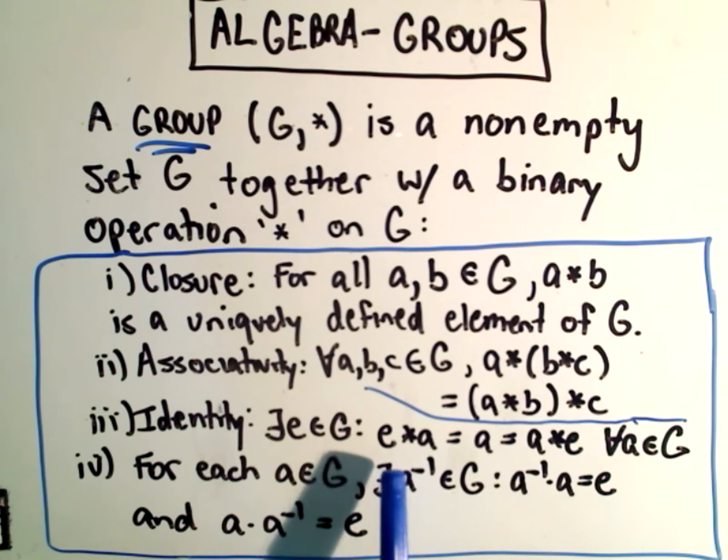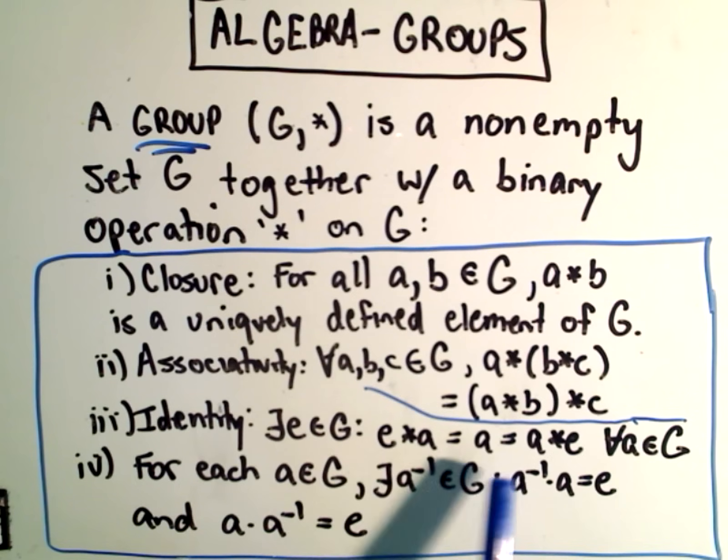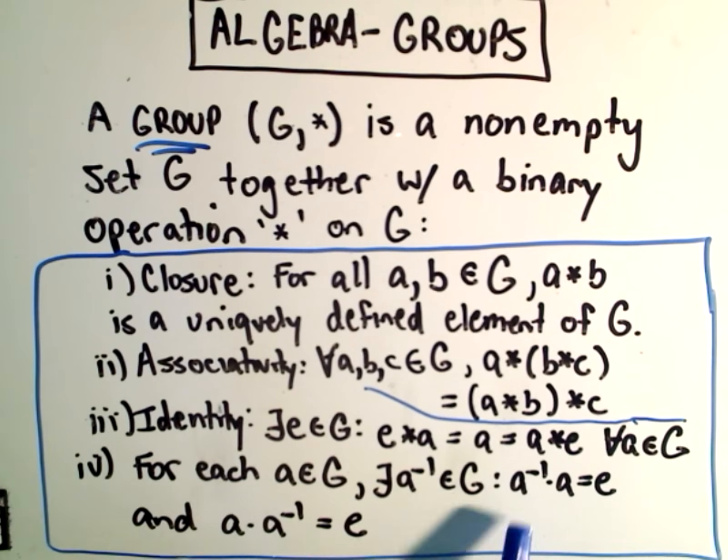There's an identity element in the set so that when you apply the identity element to any element, you get the same element back. And for every element in the set, there exists an inverse element so that when you take the inverse and the original, you get the identity element.